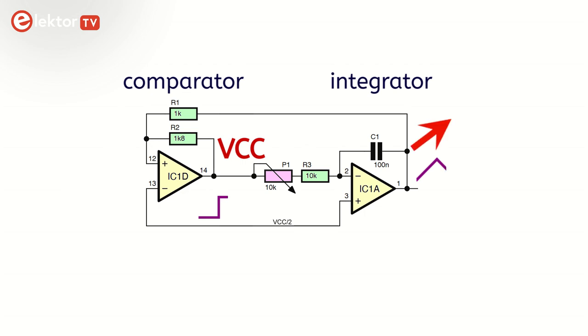The output of the inverting integrator IC1A reacts to this change by ramping down, but its speed is limited by P1, R3 and C1, so it takes a while before it becomes low enough to pull the voltage on the non-inverting input of IC1D below the voltage on its inverting input. When this happens, the output of IC1D goes low and, again thanks to resistor R2, pulls the non-inverting input down with it. Suddenly, the voltage on the non-inverting input is much lower than the voltage on the inverting input, and so IC1D's output latches low, and we are back where we started. The oscillator is oscillating.